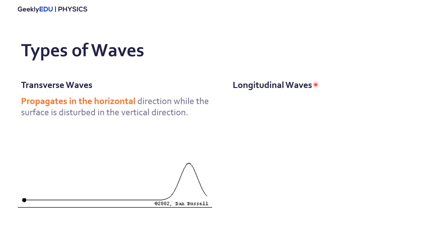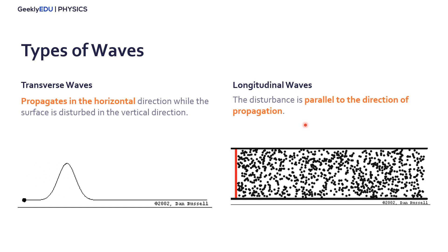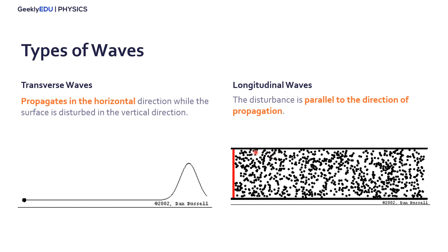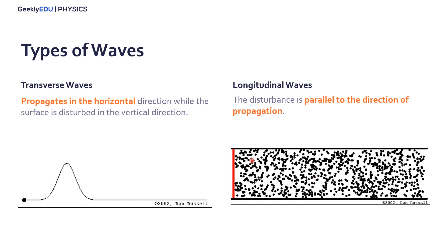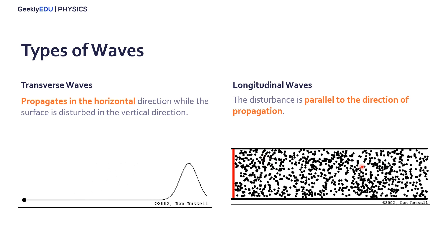Now for the longitudinal waves, the disturbance is parallel to the direction of propagation. You can see this, for example. Imagine this is air inside a tube, and we have a diaphragm here. So if we push this, we're making the disturbance horizontally, and the propagation is also happening horizontally.